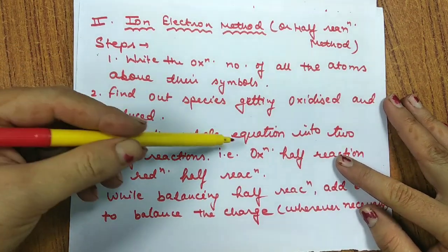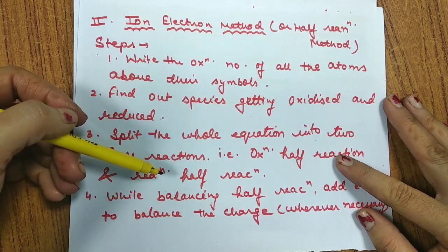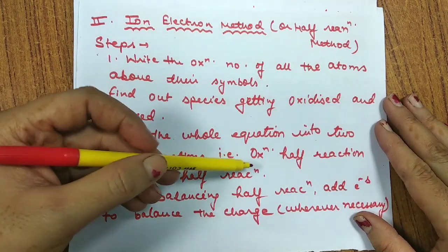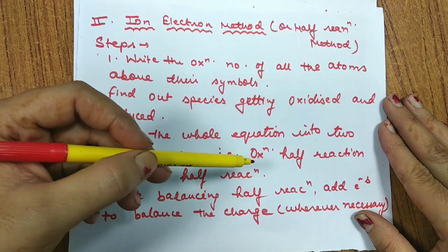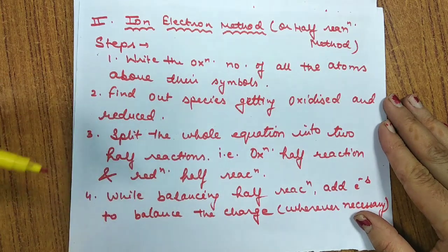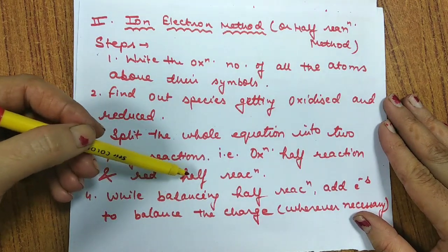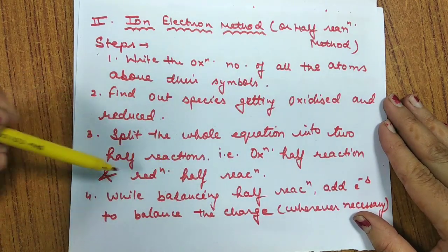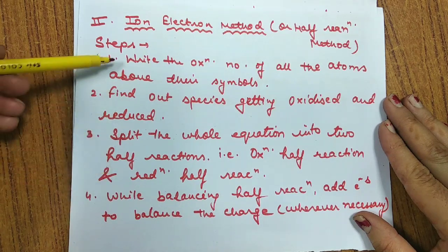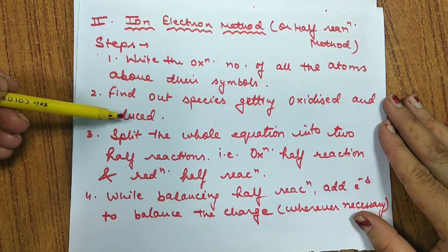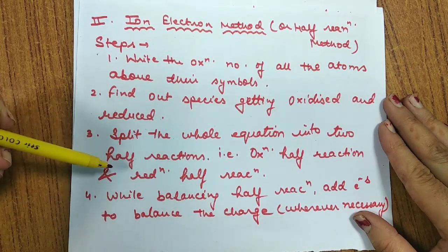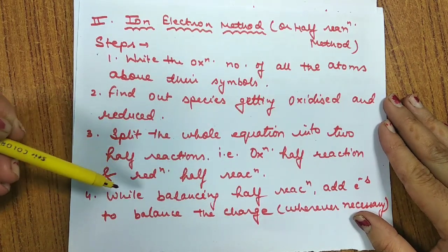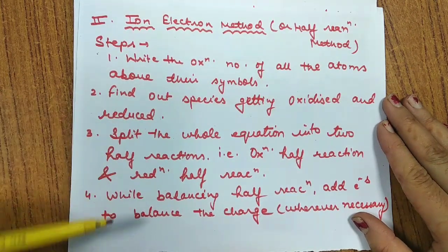Next, split the whole equation into two half reactions. One half reaction is where oxidation takes place — we call it the oxidation half reaction. The other is where reduction takes place — we call it the reduction half reaction. So the third step is to split the reaction into these two half reactions.